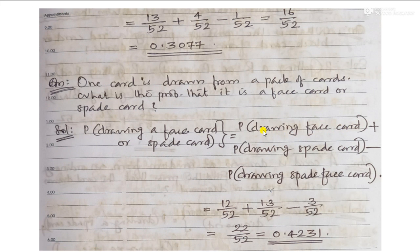There are 3 face cards per suit, and 4 suits, giving 12 face cards total, so the probability of drawing a face card is 12 by 52. The probability of drawing a spade card is 13 by 52. The spade face cards are the spade jack, spade queen, and spade king — 3 cards — so that probability is 3 by 52. Therefore, P(face or spade) equals 22 by 52, which equals 0.4231. For non-mutually exclusive events, always subtract the joint occurrence from the sum of individual probabilities.